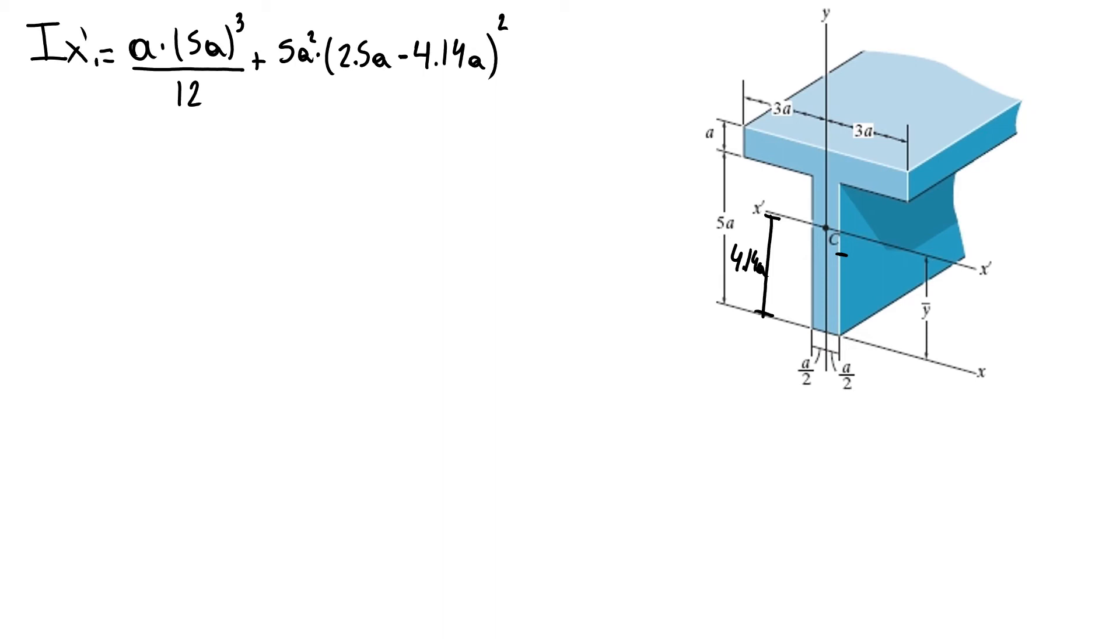This is my first area. My second area, y-bar 2, is equal to 6a times a to the cube over 12, plus my area 6a square times my y-bar, that's half of here, 5.5a minus 4.14a, squared.